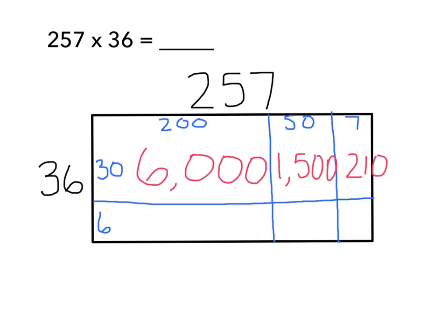On the bottom here, I have an unlabeled dimension, but I know that that's the same as the value above, 200. So here I have 200 times 6 to figure out the value of this piece. I know 2 times 6 is, I'm sorry, 2 times 6 is 12, and I know that 200 times 6 is going to be 1,200.